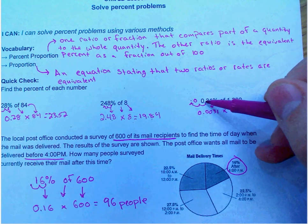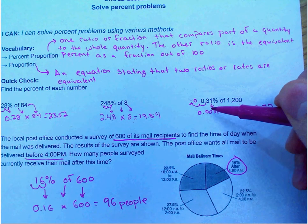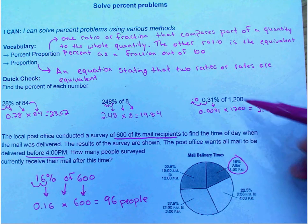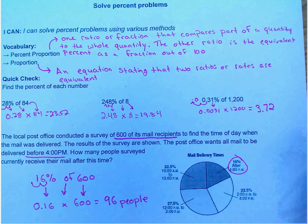Here the decimal is already in and we have 0.31% of a percent. So that's less than 1 percent. We move that decimal two places to the left, put it in and multiply and we get 3.72.